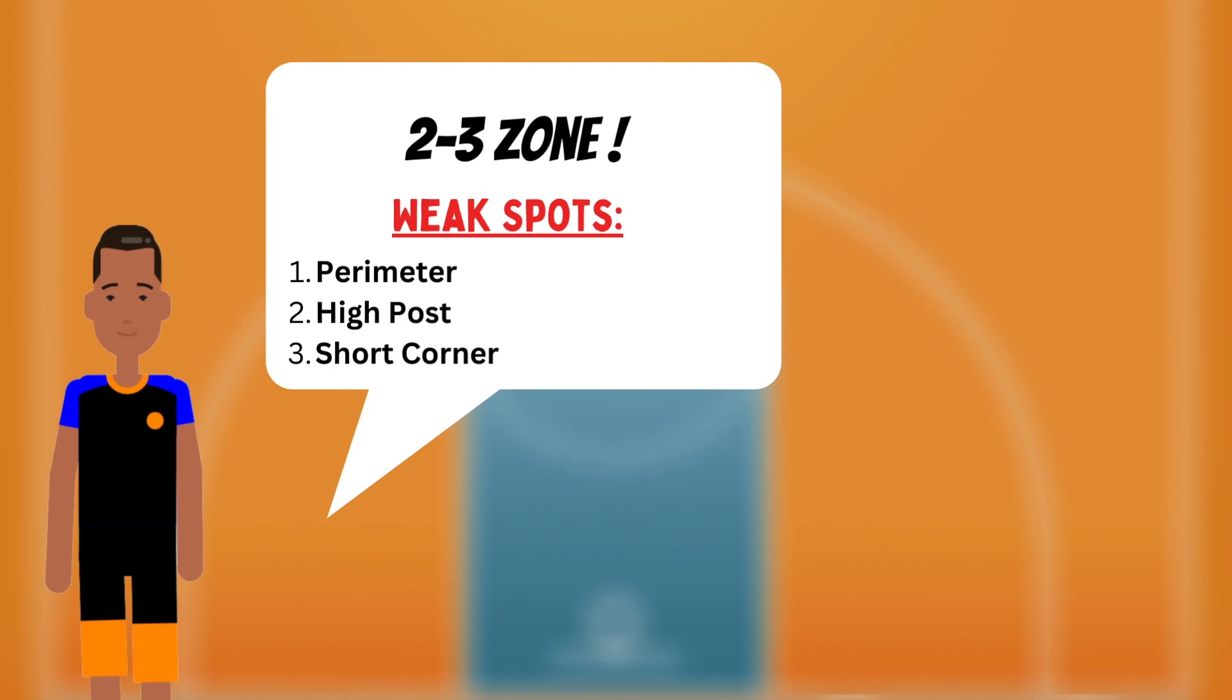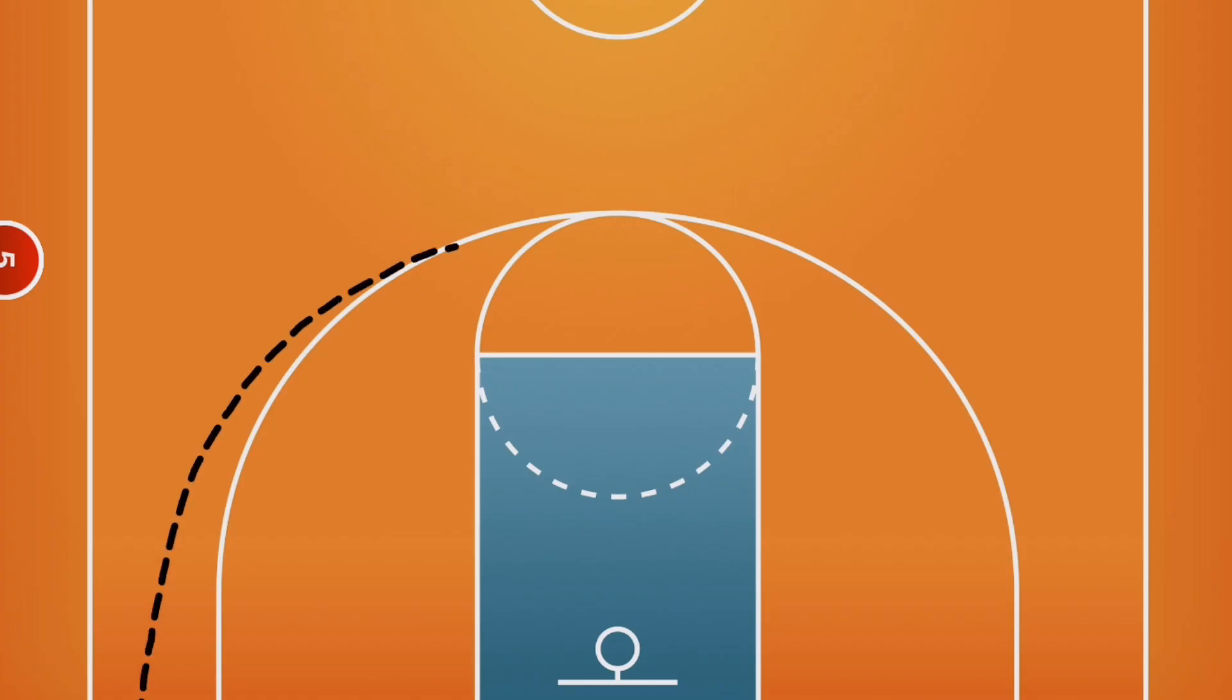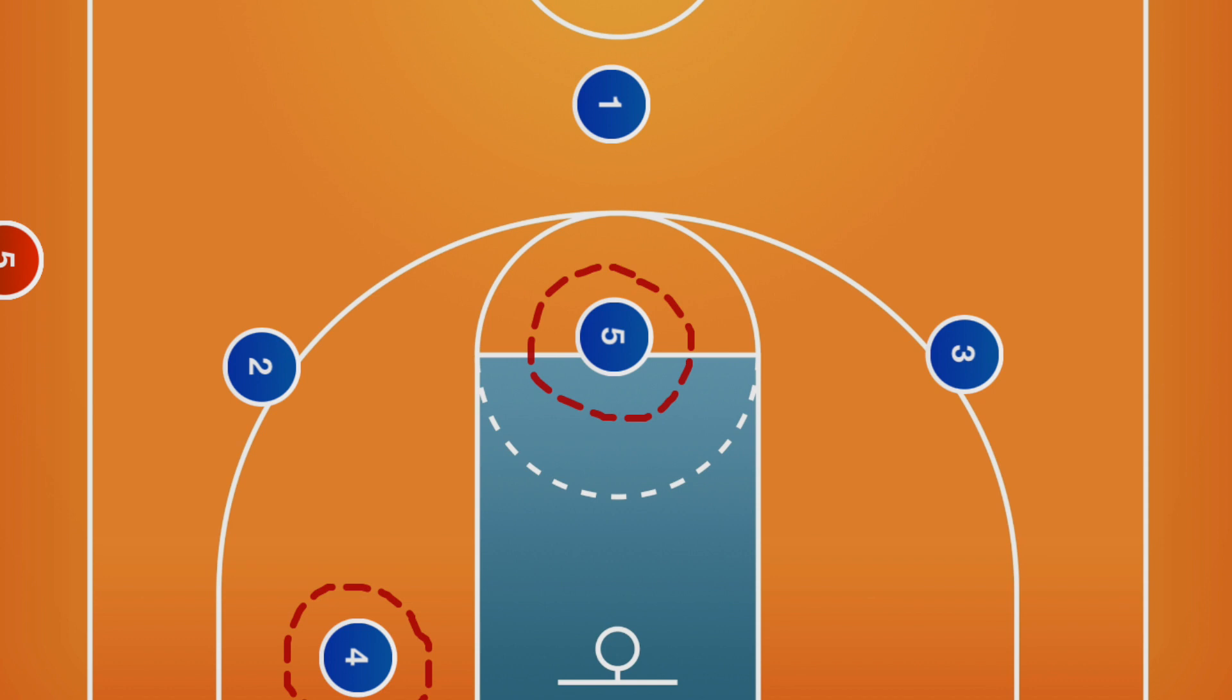There are many different ways to attack a 2-3 zone. Advanced teams will run an offense that optimizes shots from the perimeter. Beginners or youth-level teams are going to want layups or mid-range shots. For this reason, we will demonstrate a high-low action, utilizing the high post and the short corner as our points of attack. These are our default positions.